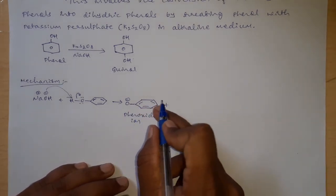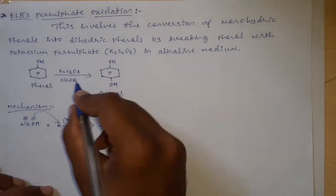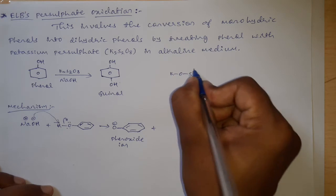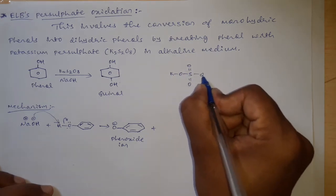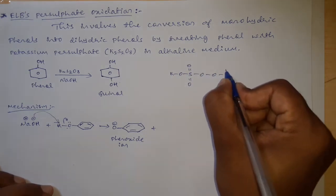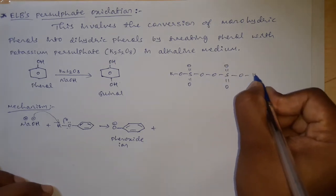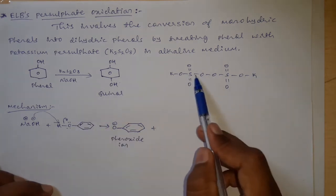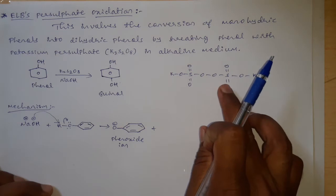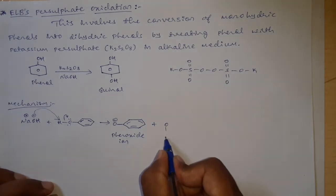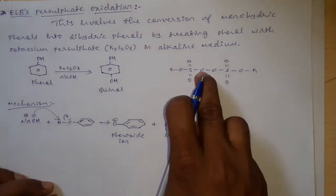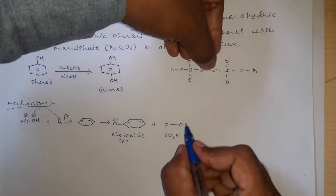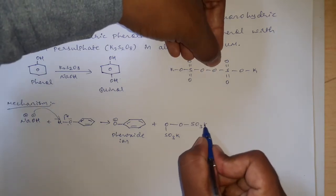When we treat the phenoxide ion with potassium persulfate — the open structure formula for potassium persulfate, K2S2O8, can be written as K–O–S(=O)2–O–O–S(=O)2–O–K, that is, O–S–O3K–O–S–O3K. This is the structural formula for potassium persulfate.